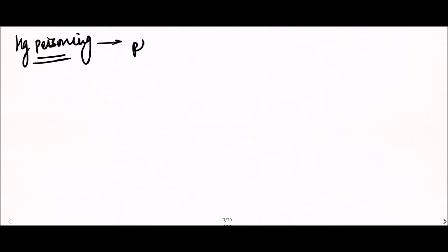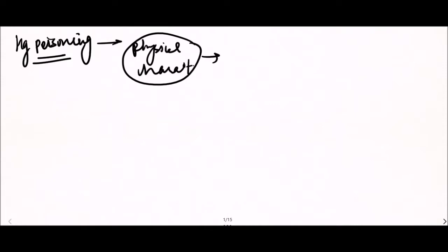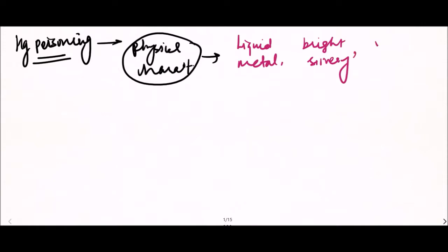Mercury is also known as quicksilver. Its physical characteristics: mercury is a liquid metal, bright silver in color, and volatile at room temperature.